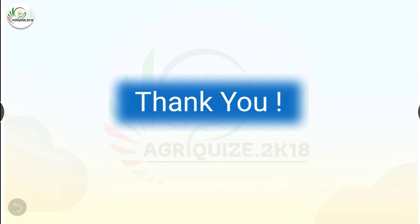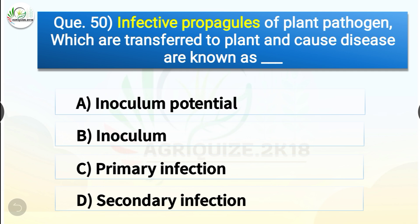Question number fifty: Infective propagules of plant pathogen which are transferred to a plant and cause disease are known as dash. The options are inoculum potential, inoculum, primary infection, or secondary infection. The correct answer is option B, inoculum. Infective propagules of plant pathogen which are transferred to a plant and cause disease are known as inoculum.